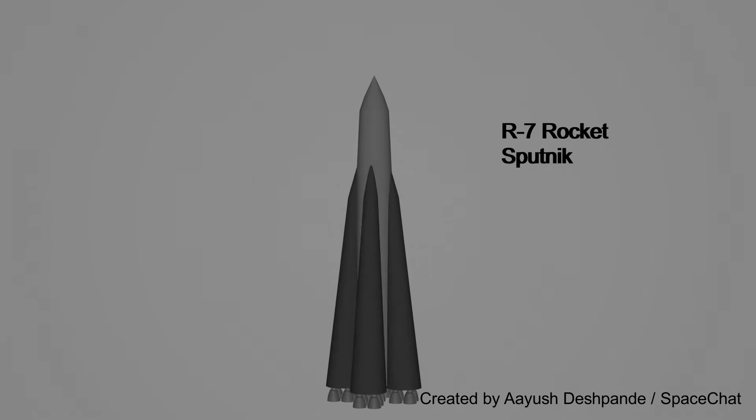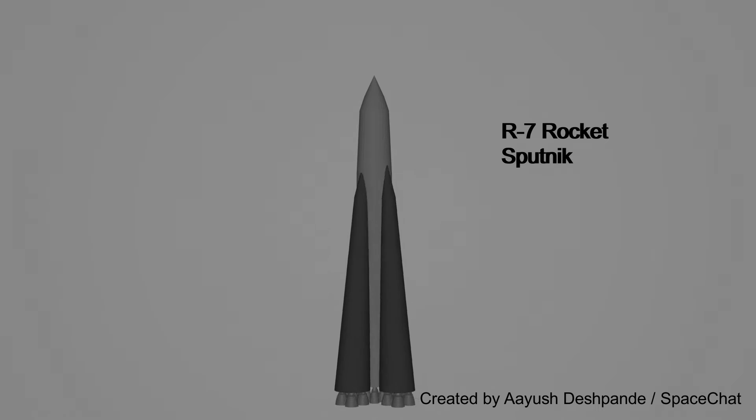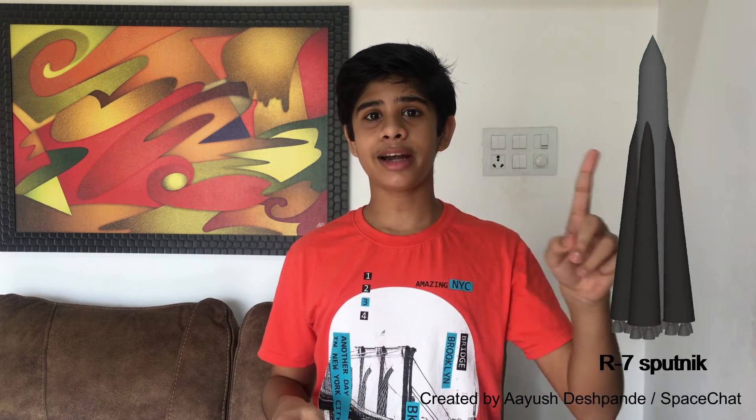The R-7 rocket, built by the Soviet Union, was the first rocket to use staging and put something into Earth's orbit. It launched Sputnik 1, which was the first satellite ever made. The R-7 was a revolutionary two-stage rocket. A fun fact: all orbital rockets to date have been multi-stage.